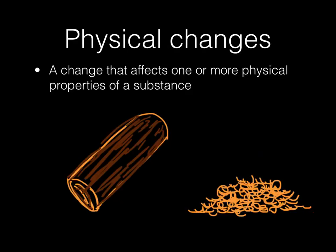A physical change is a change that affects one or more of the physical properties of a substance. For example, this log — if you were to chop it up and make it into sawdust, that's a physical change. It's physically changing the wood, but there's no chemical change. The wood is just in smaller pieces; it's still the same substance.